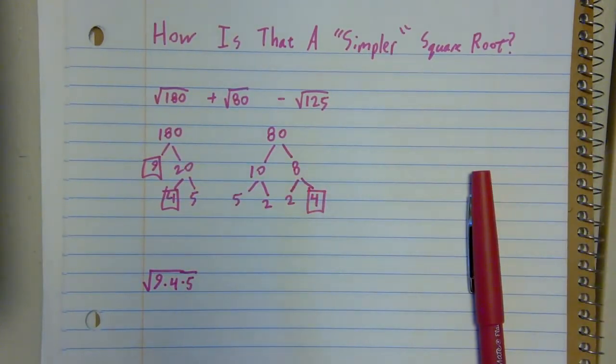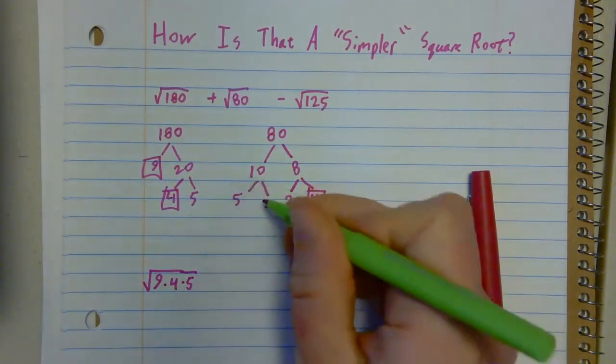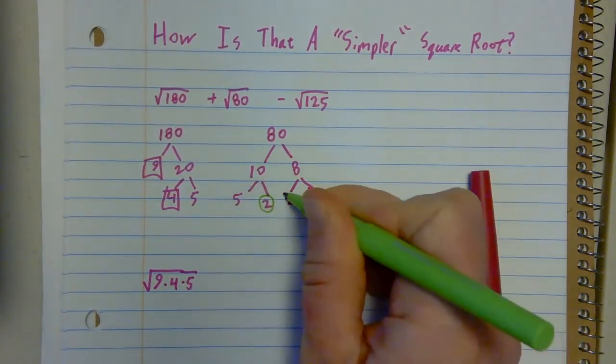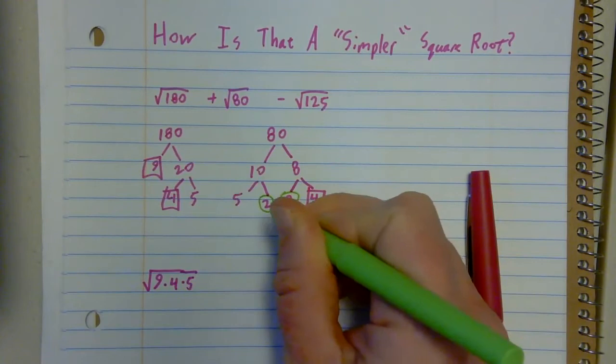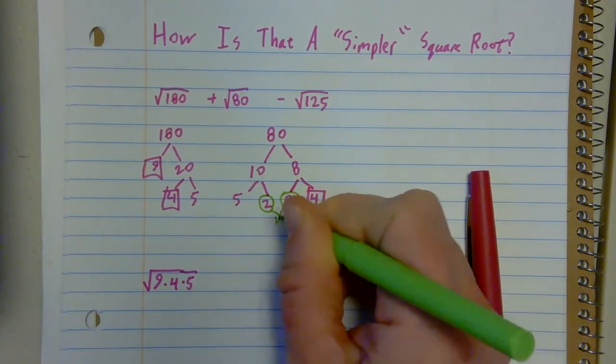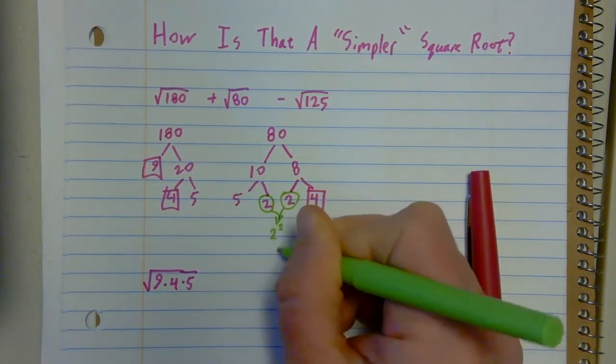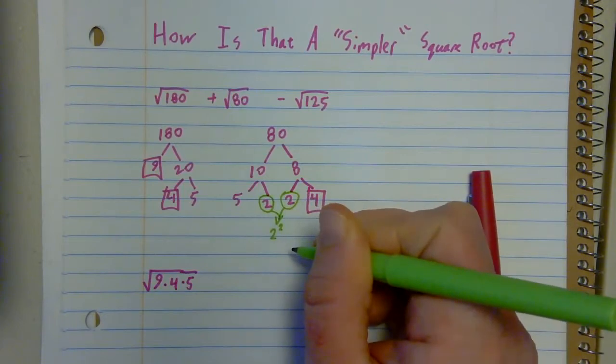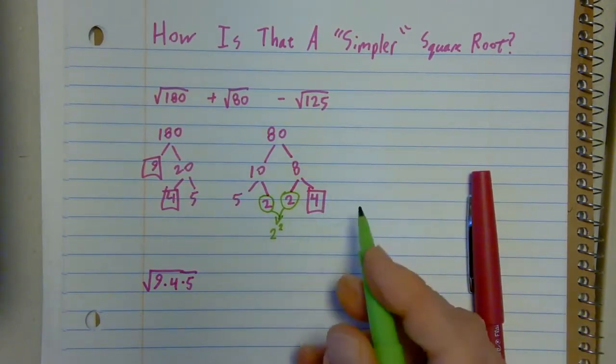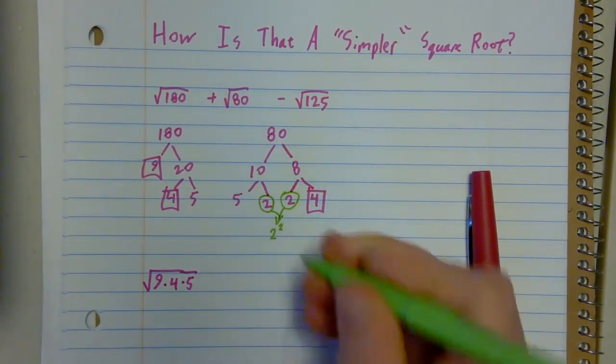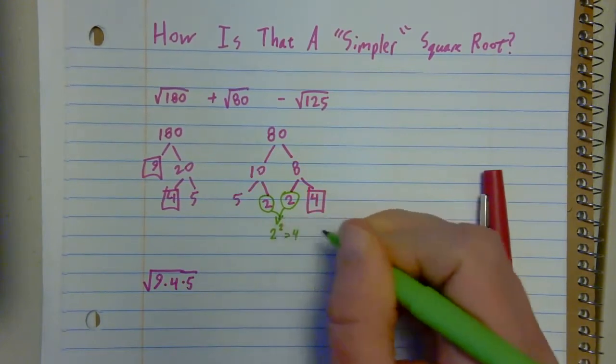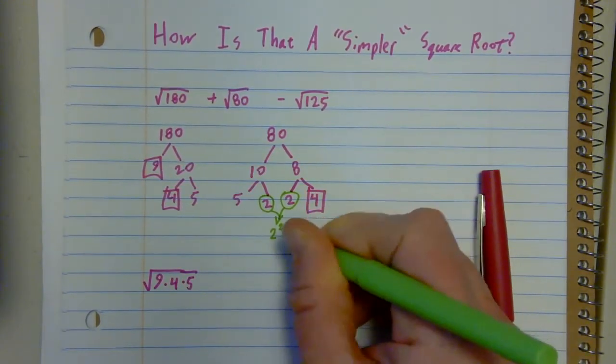I've also got a double factor in here. I've got a 2 and another 2. So those together would make 2 squared or another 4. And I could even combine my 4's because I have two 4's.